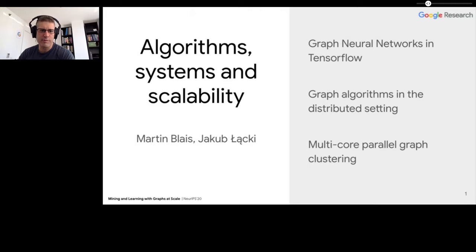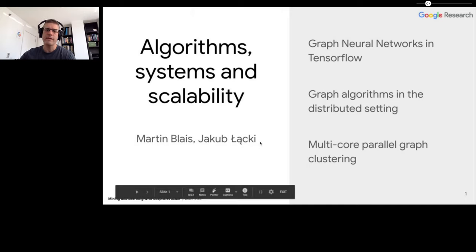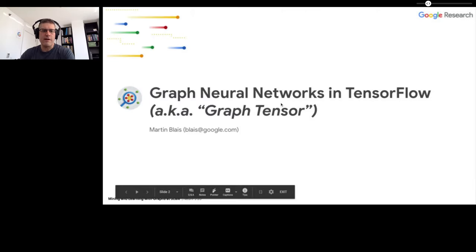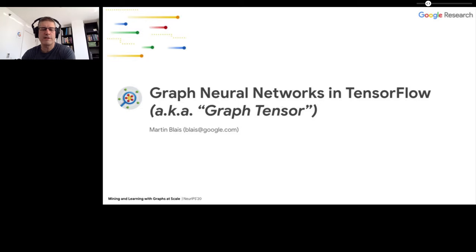This session will consist of three talks. First, a talk on implementing graph neural networks in TensorFlow, a talk on how to implement graph algorithms in a map-reduce scalable distributed setting, and a talk on implementing graph clustering algorithms on multi-core infrastructures. In this first talk, I will present graph neural networks in TensorFlow, a project that internally we call the GraphTensor project.